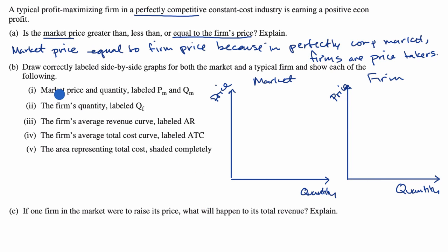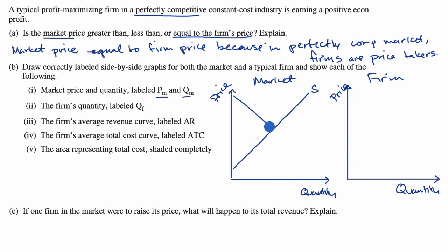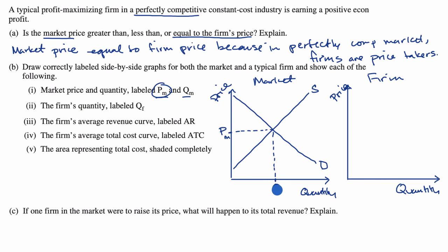They want us to show market price and quantity — the equilibrium price and quantity in the market. We draw the supply curve for the market, upward sloping, and the demand curve for the market. Then we have the equilibrium price labeled P sub M, and the equilibrium quantity in the market labeled Q sub M.